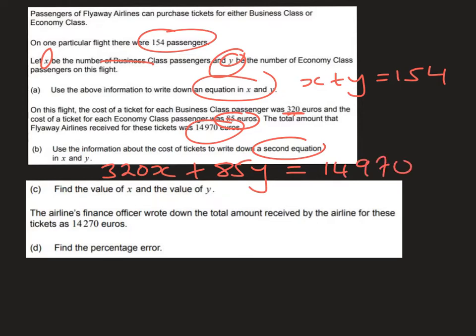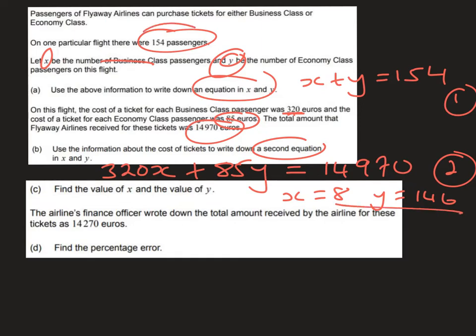Now we have our first equation and our second equation. The simplest way to solve these is using the simultaneous equation solver on your GDC. Doing that gives X equals 8 and Y equals 146 — those are the number of tickets sold for business and economy class. You can double check that together they add up to 154.